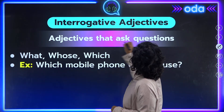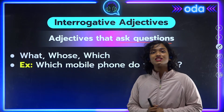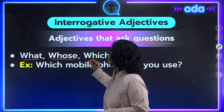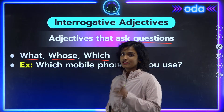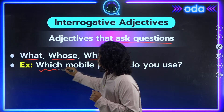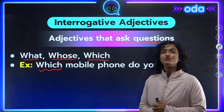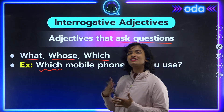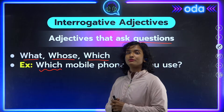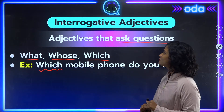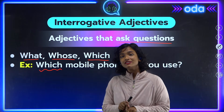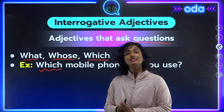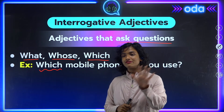Our last type is interrogative adjectives — words used to ask questions. There are three: 'what,' 'whose,' and 'which.' For example, 'Which mobile phone do you use?' — the word 'which' is used to ask a question about the mobile phone. So we have covered all five types: descriptive, quantitative, demonstrative, possessive, and interrogative.